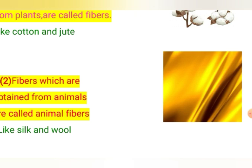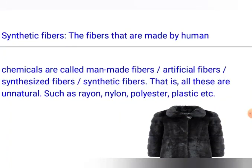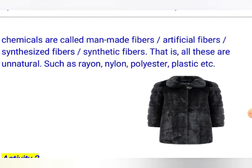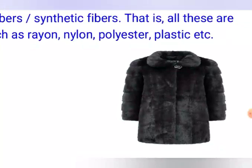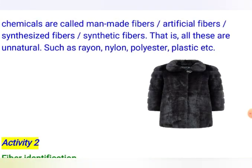There is another type of fiber: synthetic fibers. These are fibers made by human beings with the help of different chemicals. Because they are made by men using chemicals, they are called man-made fibers, artificial fibers, or synthetic fibers. All these terms are the same. They are unnatural because they do not exist naturally and are not obtained from plants or animals. Different types of synthetic fibers include rayon, nylon, polyester, and plastic.